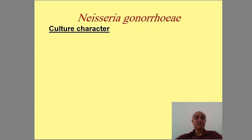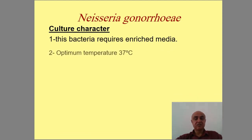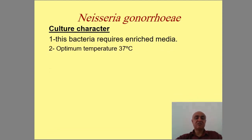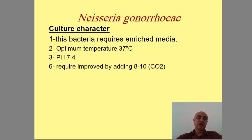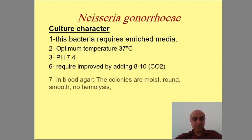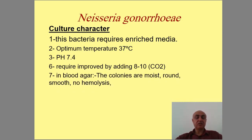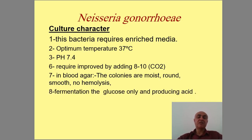Culture characters: bacteria requires enriched media. Optimum temperature is 37°C. pH of approximately 7.2. Requires 5-10% CO2 for improved growth. On blood agar it forms round, smooth, non-hemolytic colonies. Glucose and maltose are fermented. It is not a molecule — glucose is fermented to produce acid without gas.